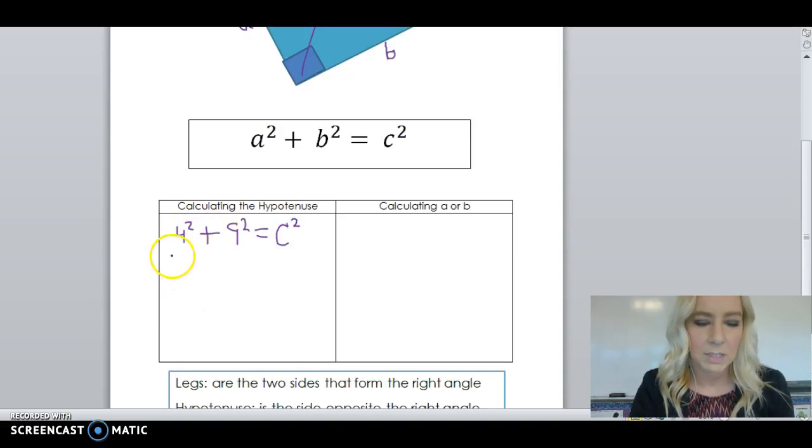So, 4 squared is 16 plus 9 squared is 81 which equals C squared. Now, I'm going to combine these two terms. 97 equals C squared.